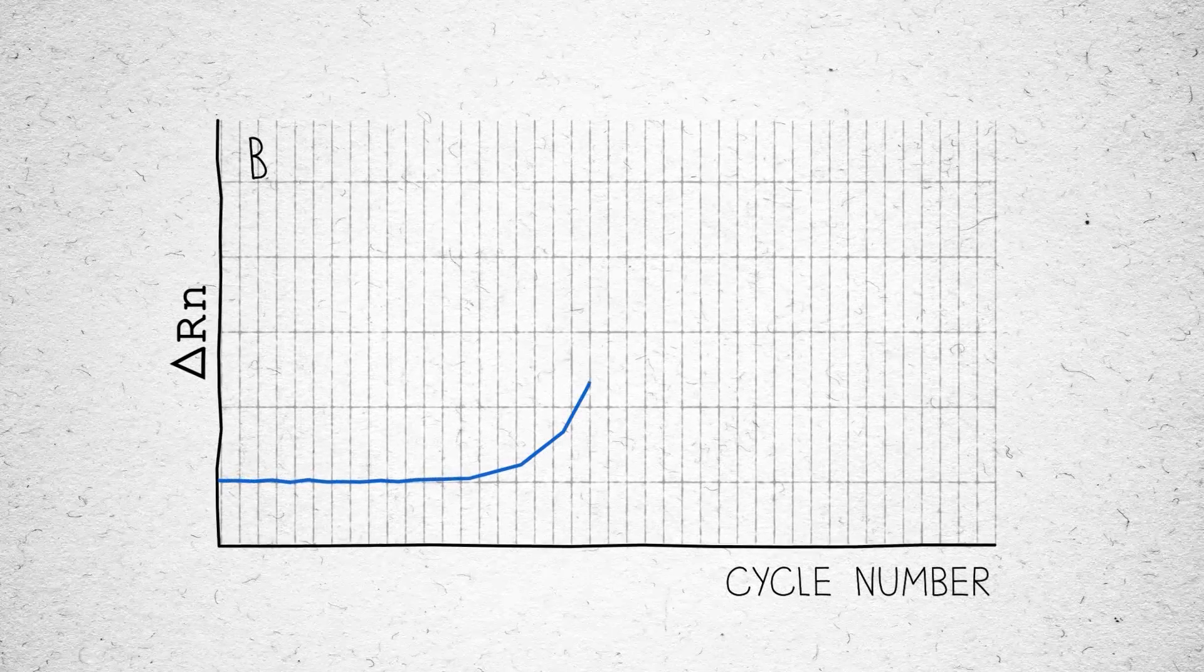For example, a CT difference of 1 between two samples means that one sample had twice as much target as the other. The sample with the lower CT had more starting material.